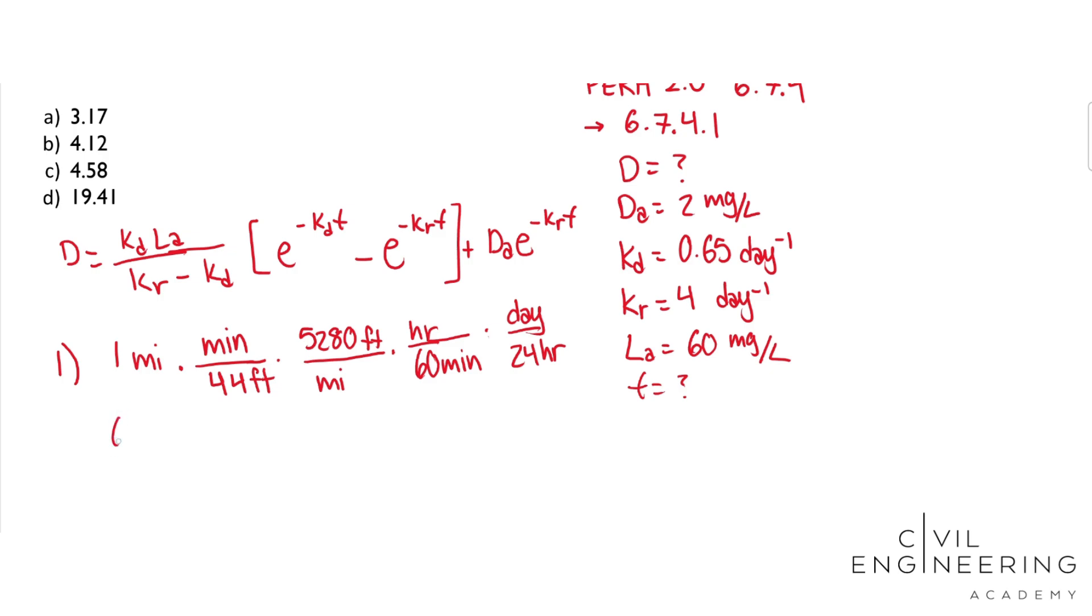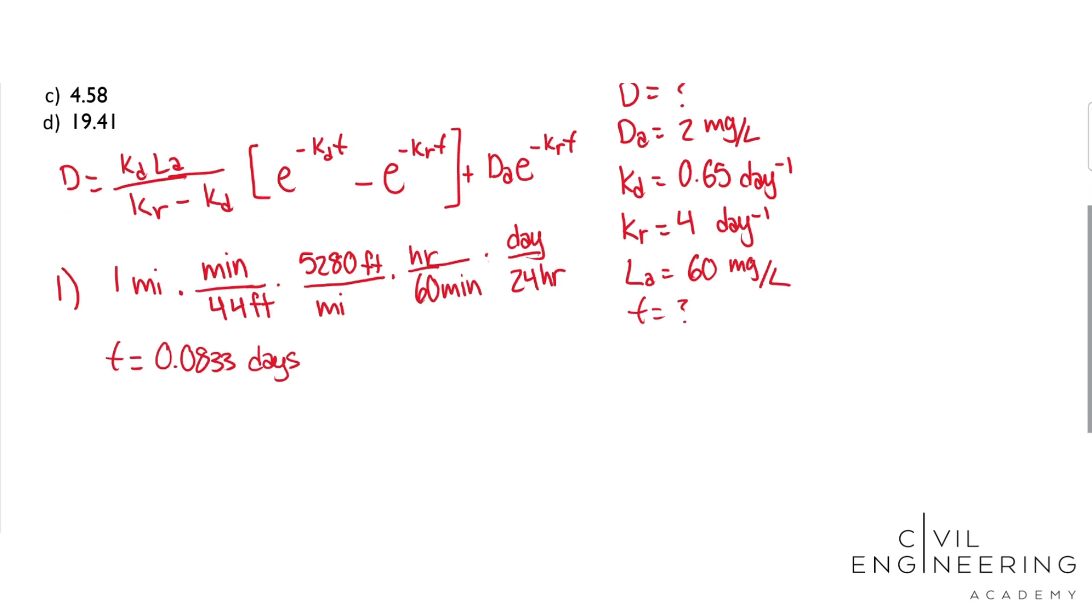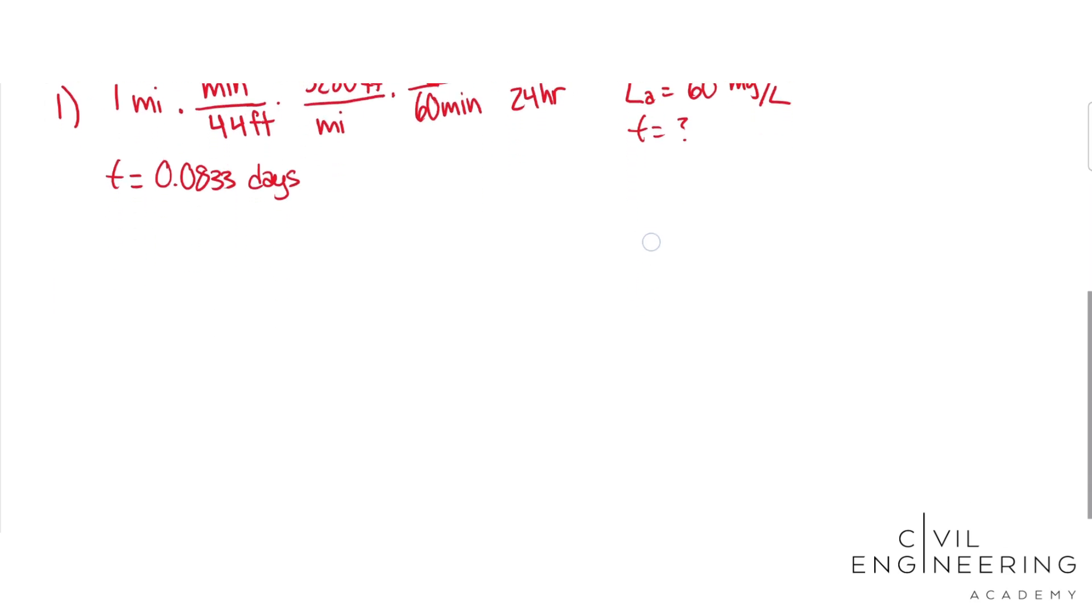And then from that, we get time is equal to 0.0833333 and it keeps going, days. And now we have all of our variables, and we can just plug it right into this big, long equation.